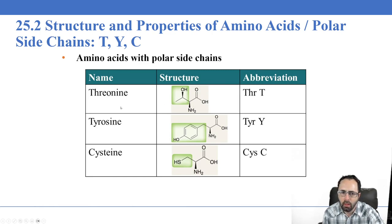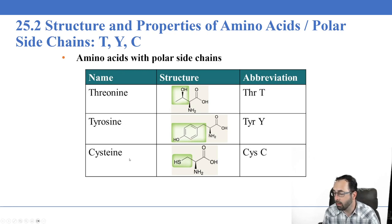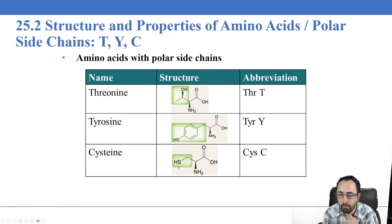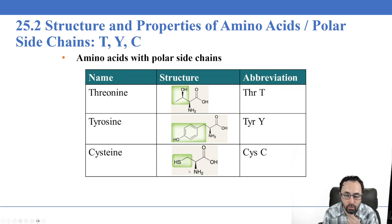Threonine has a polar side chain with two carbon atoms and a hydroxyl group on the first carbon attached to the alpha carbon. Tyrosine has essentially a carbon and then a phenol group attached. Cysteine is a very important amino acid — it is the only one that contains a sulfur atom. This sulfur atom is very important to protein structure. When sulfides are oxidized, they produce a disulfide — a bond between two sulfur atoms — and that disulfide bond is extremely important to the structure of proteins when these amino acids react with one another.